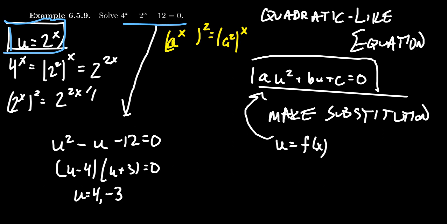Sometimes we get so excited about solving the quadratic equation, we forget that we made a U substitution. We have to go back to the original variable. What this tells us is that if U = 4, that means 2^x = 4. And if U = -3, that means 2^x = -3.